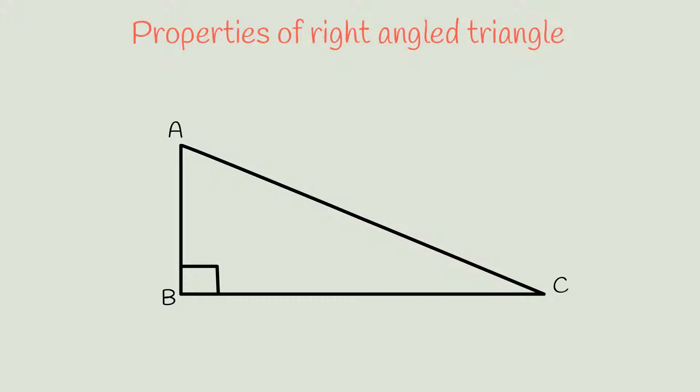The side opposite to the right angle is called the hypotenuse. The hypotenuse is the longest side in the triangle.